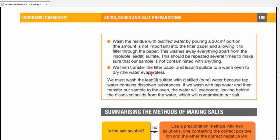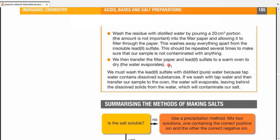The white residue on the filter paper is the compound we want, but it is contaminated with solutions of sodium nitrate in the reactant that was in excess. A simple washing step would do the trick. Wash the residue with distilled water by pouring a 20 cubic centimeter portion. Amount is not important. You can pour a little less, a little more, but a little more would always be in favor of getting the purest amount. Into the filter paper, allow it to filter through the paper. This washes away everything that is soluble and just keeps our insoluble salt on the filter paper. It should be repeated several times to make sure our sample is not contaminated with anything. Doing it in parts with smaller amounts is a better idea, rather than going all in with a larger amount of liquid. We would suggest that you do it three to four times with 20 cubic centimeters of water, rather than using 40 cubic centimeters in one go. Surface area is the factor considerable here.